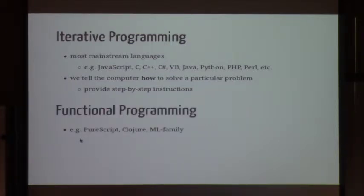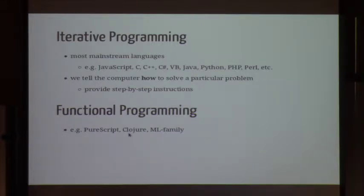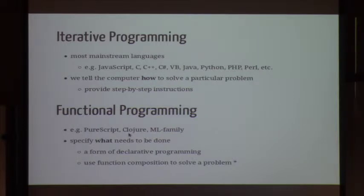Moving to functional programming — there's a language called PureScript, a functional programming language that compiles down to JavaScript. There's also Clojure, which came out in the last five or six years. When you hear functional languages, don't always think statically typed — there are dynamically typed functional languages too. In functional languages, you basically specify what needs to be done, in stark contrast to specifying how things need to be done.